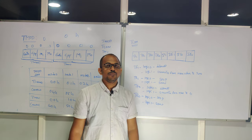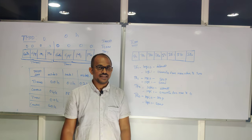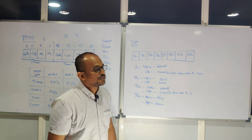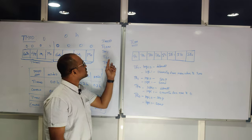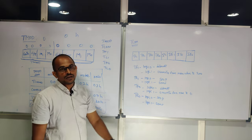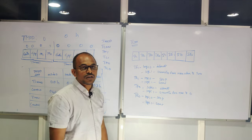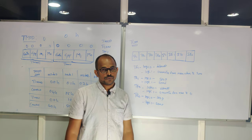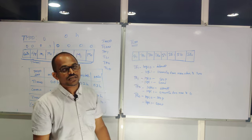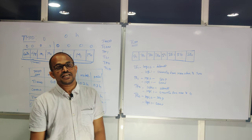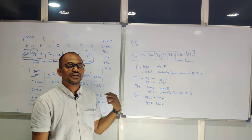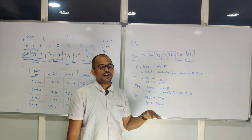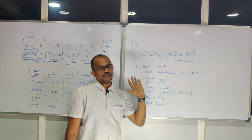Finally, the T-MOD register is used only for selection of timer or counter. For control, we use the second register T-CON. T-CON register helps us control the timers. The key difference between T-MOD and T-CON is that T-CON is a bit-addressable register, while T-MOD is not.